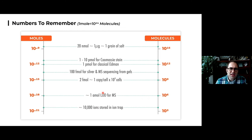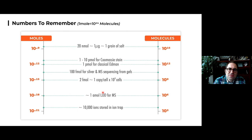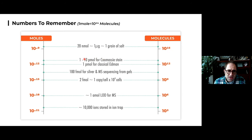I sometimes start lectures with this data slide to help us get our head around what we're talking about. We've got moles on the left and number of molecules on the right. If you think about a grain of salt, it's about 10 to the 15, 10 to the 16 molecules — a relatively large amount of material. For traditional techniques like Edman sequencing, you need about a picomole, about 10 to the 12 molecules.